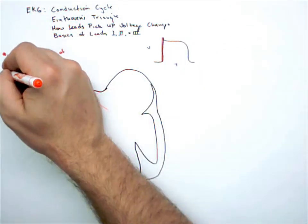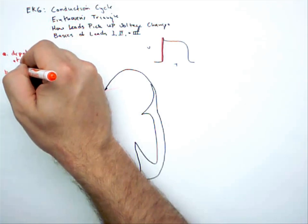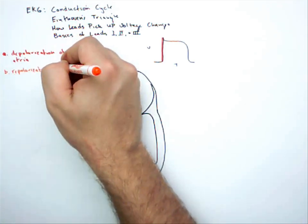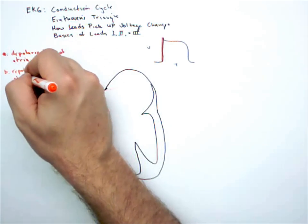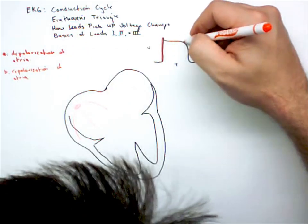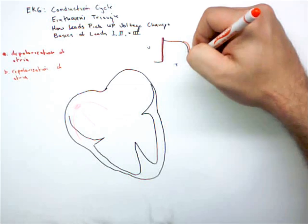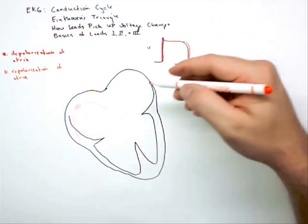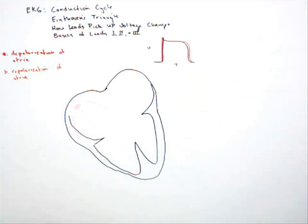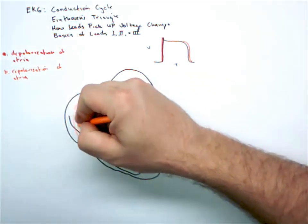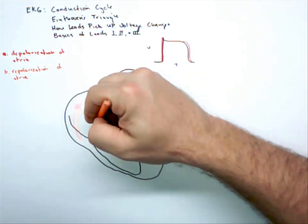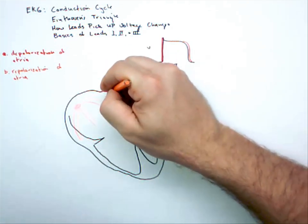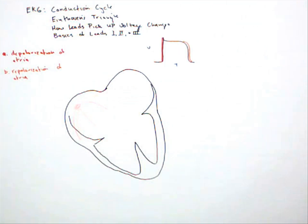Next up is repolarization of the atria. Again, if we're picking up voltage changes, we're going to pick up this voltage change as well. It's going to be called repolarization, and we'll pick it up over here. Switching to colored pencil — basically it shows up and progresses through the heart, reversing the path of depolarization.